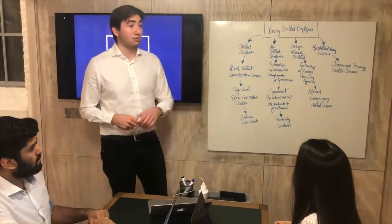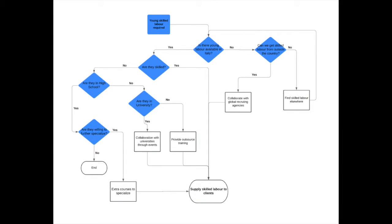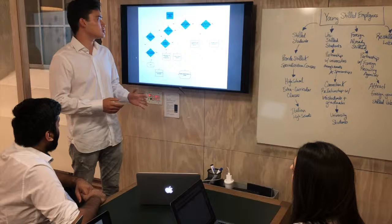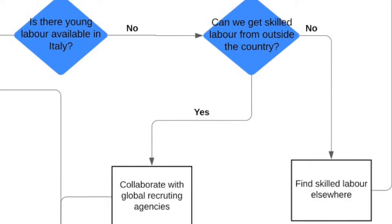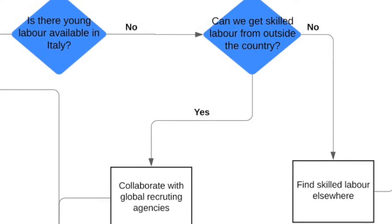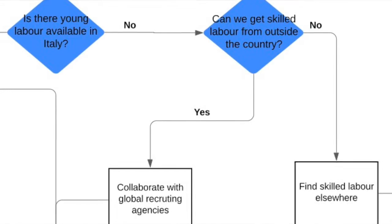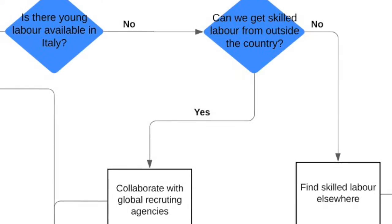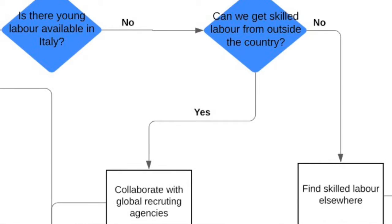I've created a flowchart so you can see how we get from the challenge of needing young skilled labor to actually having skilled labor to supply to our clients. The first question is: is there young labor available in Italy? If not, we ask: can we get skilled labor outside the country? If we can, we collaborate with global recruiting agencies to bring in young skilled labor from abroad and supply it to our clients.